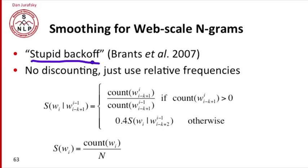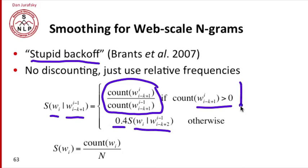And the intuition of Stupid Backoff is if I want to compute the stupid backoff probability of a word given some previous set of words, I use the maximum likelihood estimator. This is the count of the words divided by the count of the prefix. If that count is greater than zero, and if not, I just back off to the probability of the previous, the lower order n-gram prefix with some constant weight. So if the trigram, let's say, occurs, I just use the count of the trigram. If it doesn't, I take the bigram probability, multiply by 0.4 and just use that.